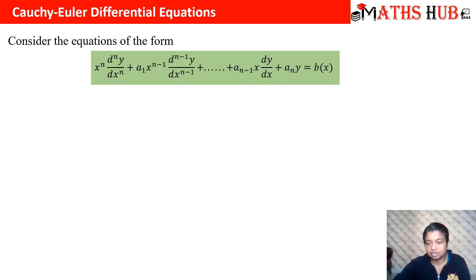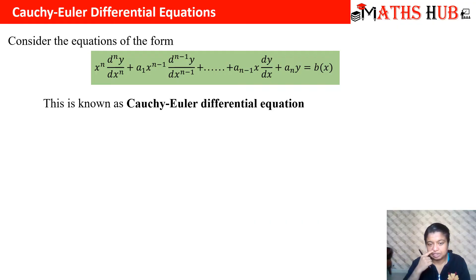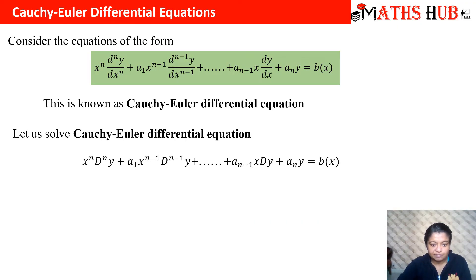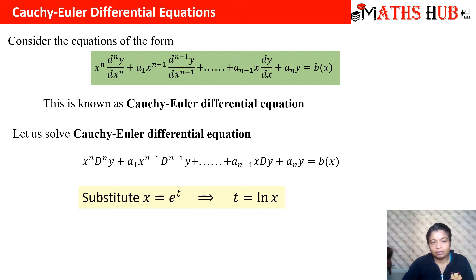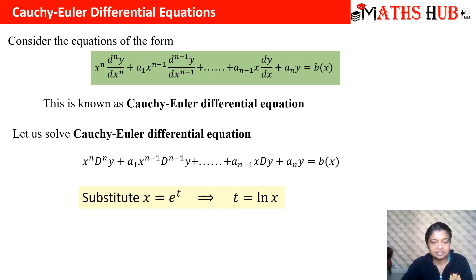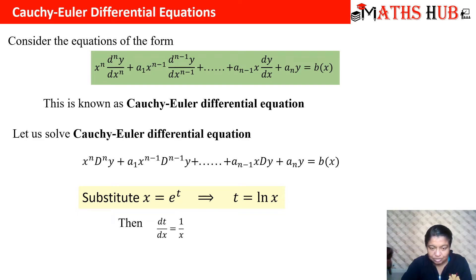How do we convert this Cauchy-Euler equation into a constant-coefficient equation? We substitute x = e^t, so that t = log x. Everything in the differential equation — all differential coefficients — must then be converted in terms of t. We will convert dy/dx first, then d²y/dx², and from there we'll see the pattern for higher-order derivatives.